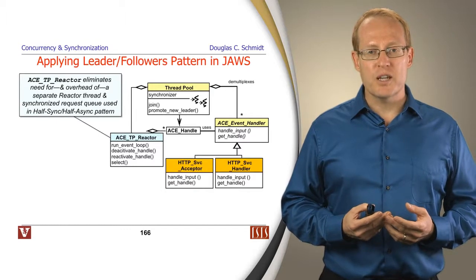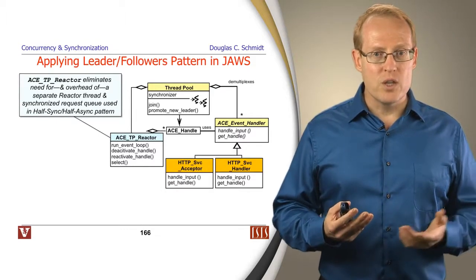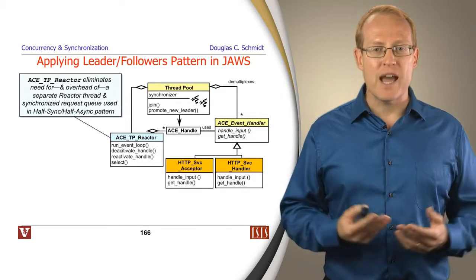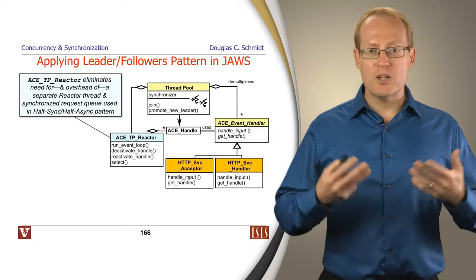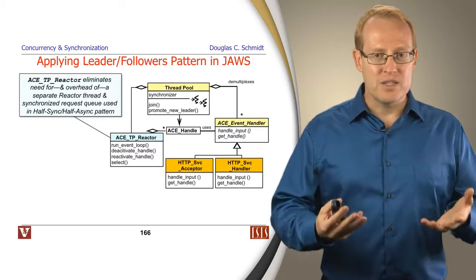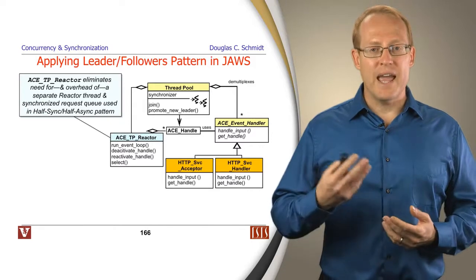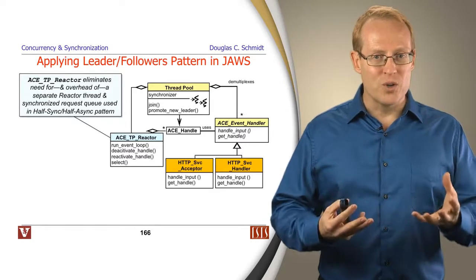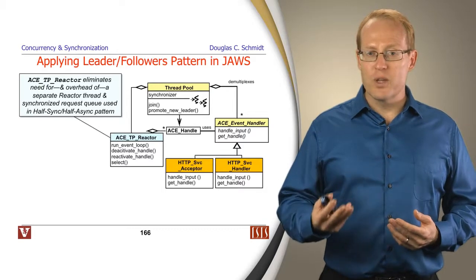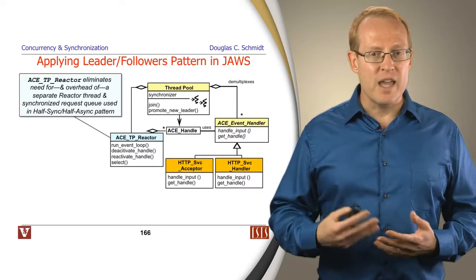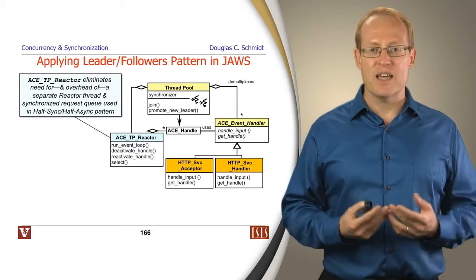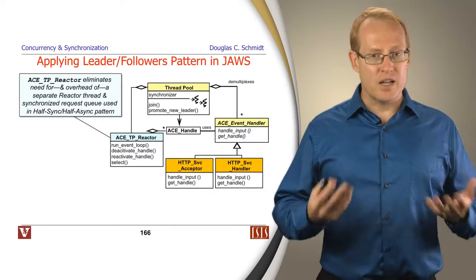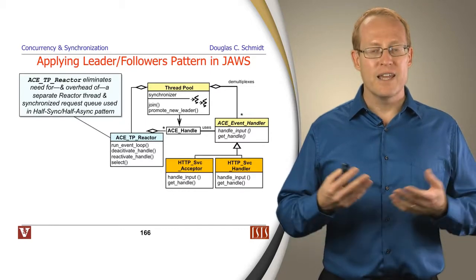Let's talk about how we can apply this pattern to JAWS. We can use a special framework in ACE called the ACE ThreadPool Reactor, or ACE TP Reactor. This TP Reactor is basically a reactor with the special property that a pool of threads can call its run event loop — its handle events method. The thread pool uses a leader-followers pattern to have one thread at a time wait for work while the others queue up as followers. The nice thing is we can eliminate the need for the extra thread in the async layer we had with half-sync/half-async, and we can also get rid of the synchronized message queue, greatly reducing overhead and making the system more predictable.